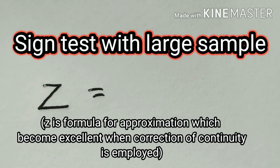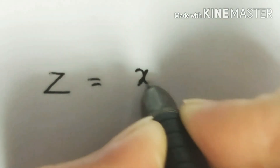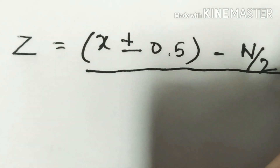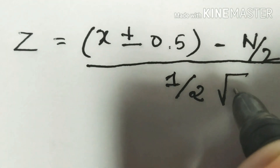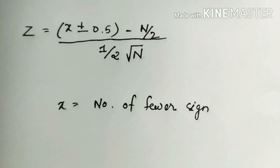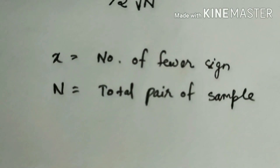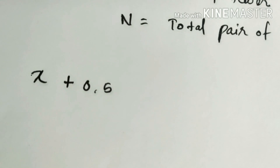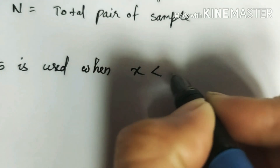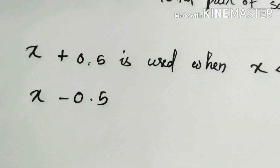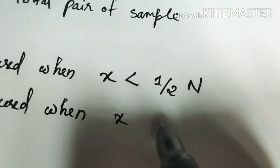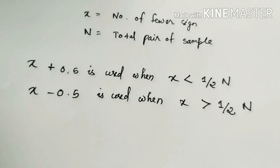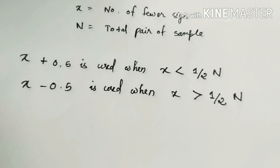For a larger sample, the first step is to find the value of z. In the formula, x is the number of fewer signs and n is the total pair of samples. x plus 0.5 is used when x is smaller than half of the total pair of samples, and x minus 0.5 is used when x is greater than half of the total pair of samples. Let us solve this with an example to see how the formula is used for the Sign Test when the sample size is larger.